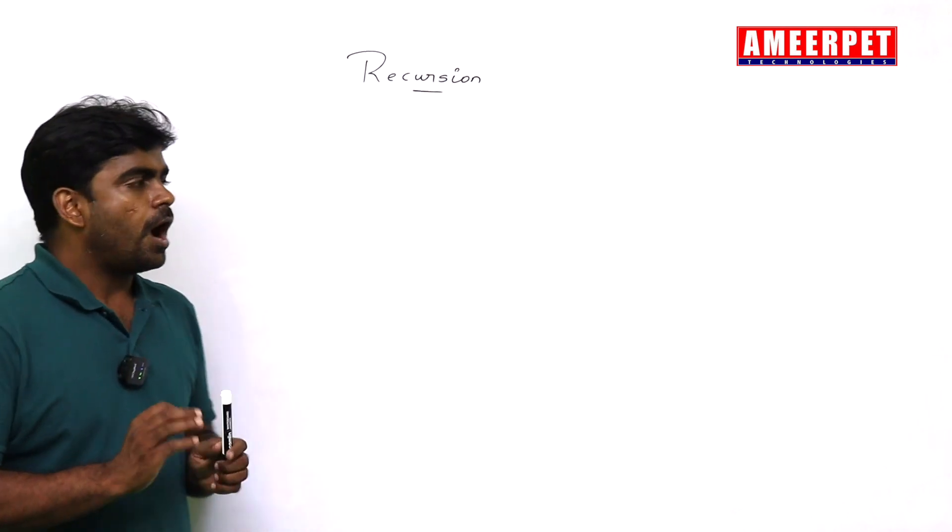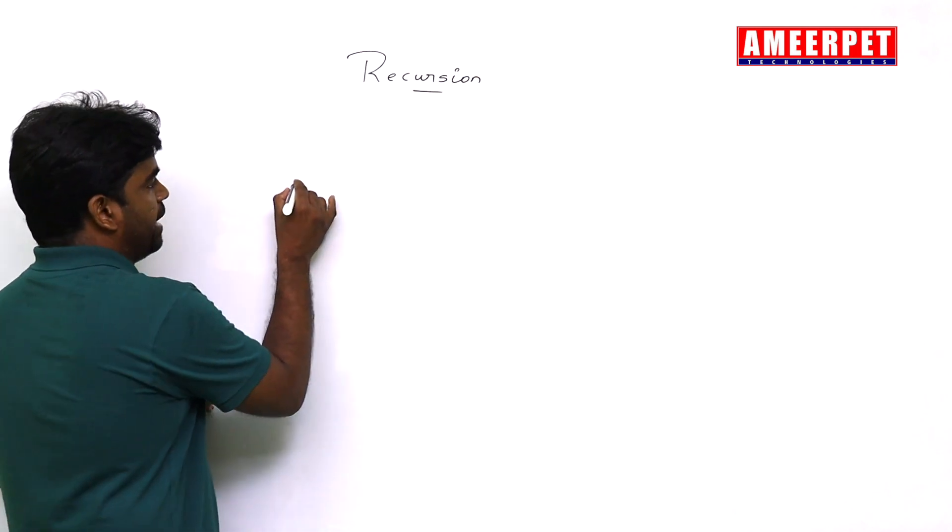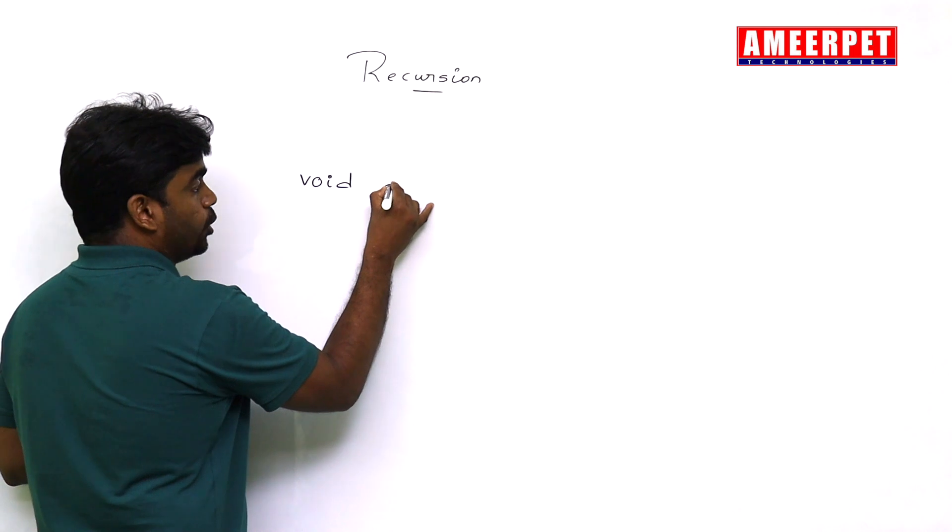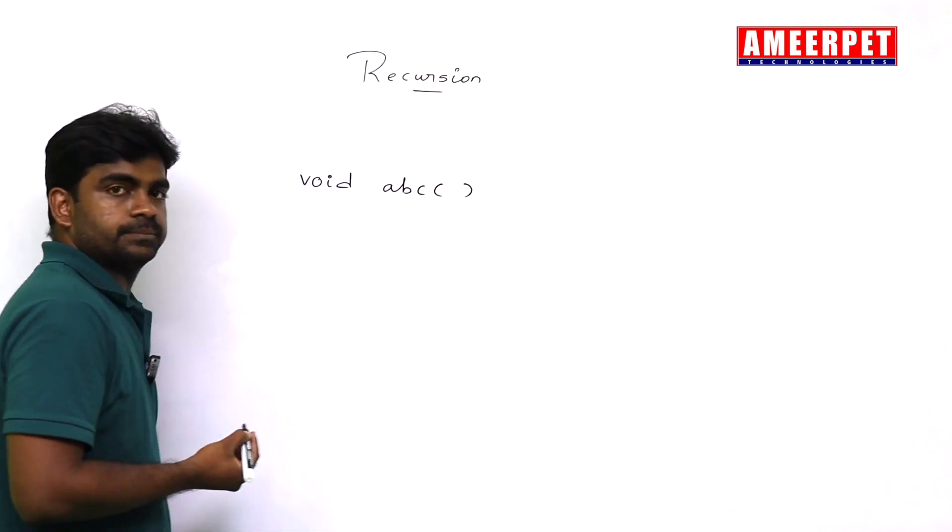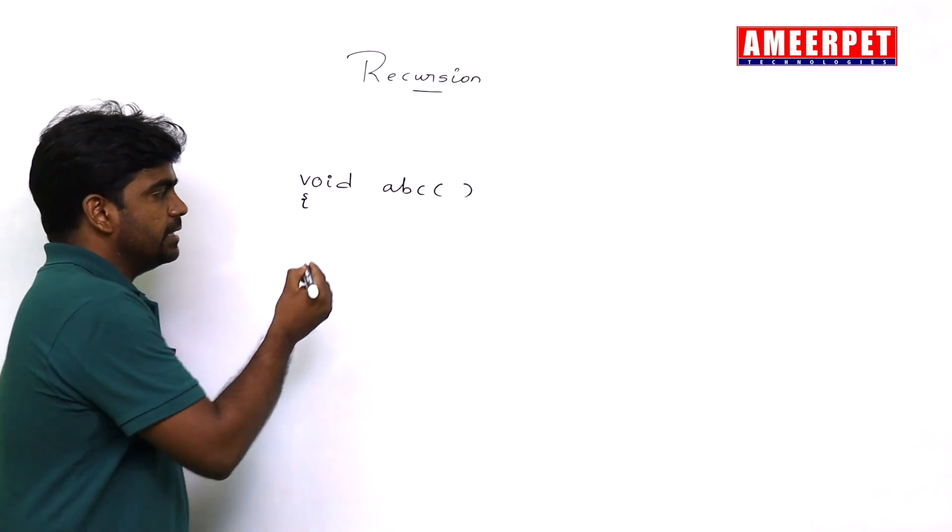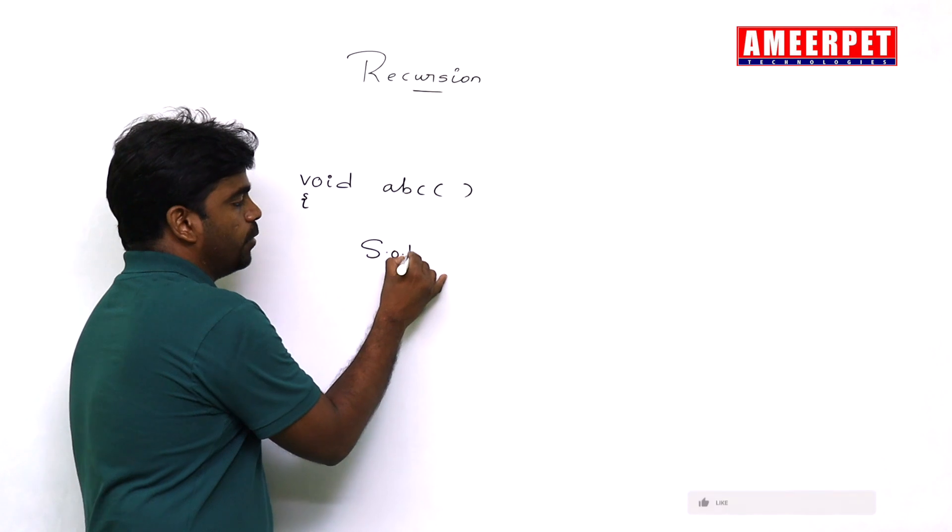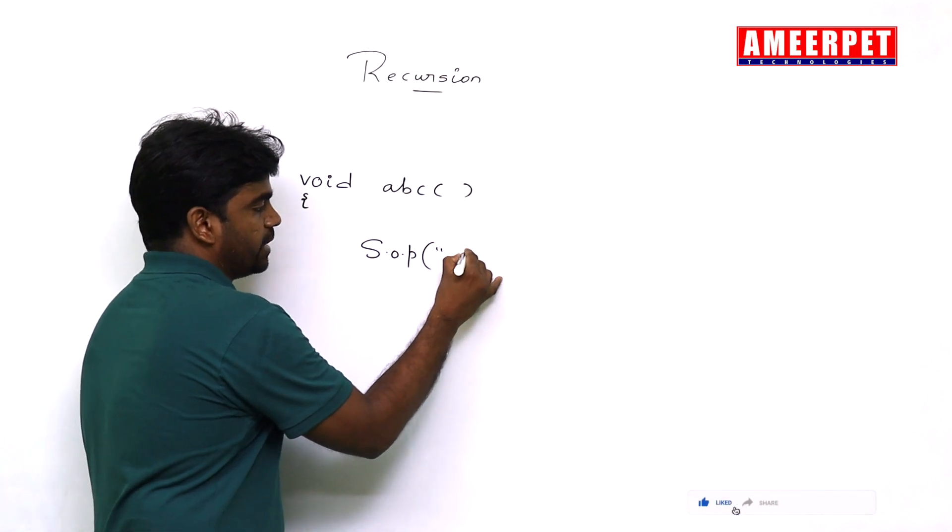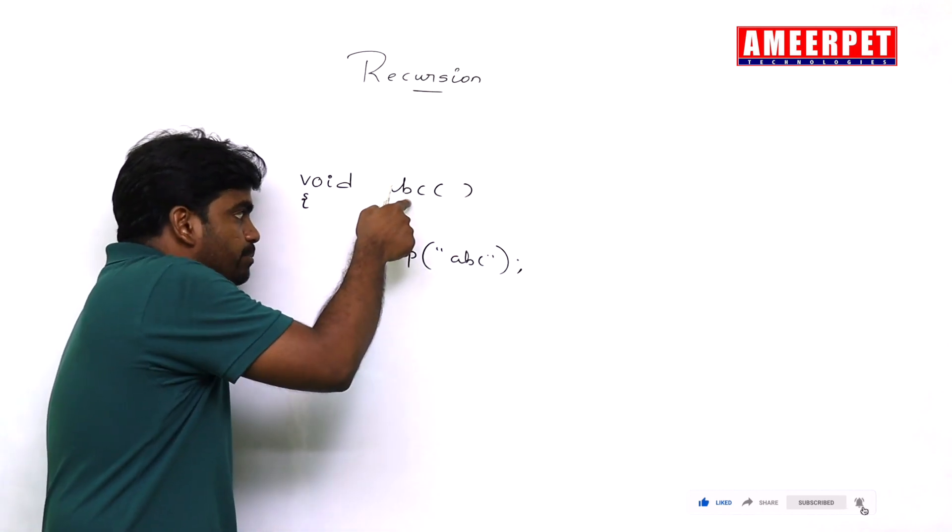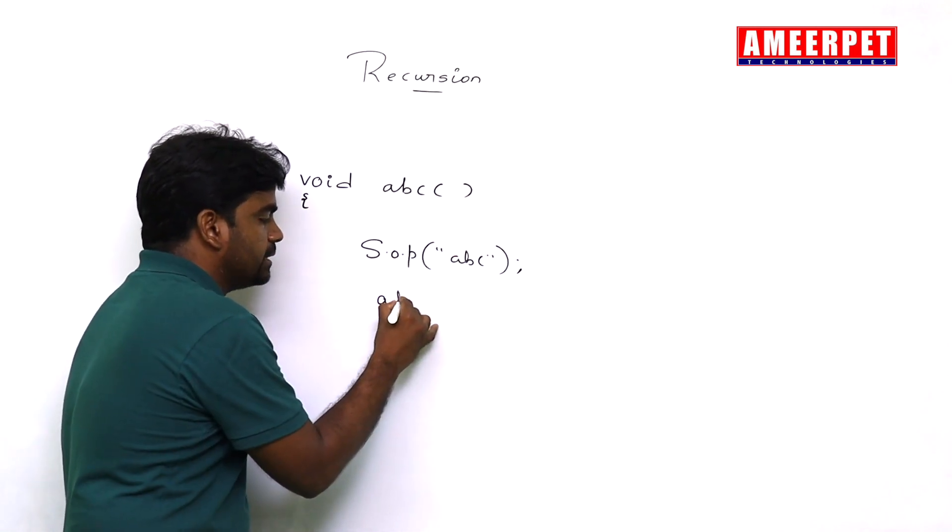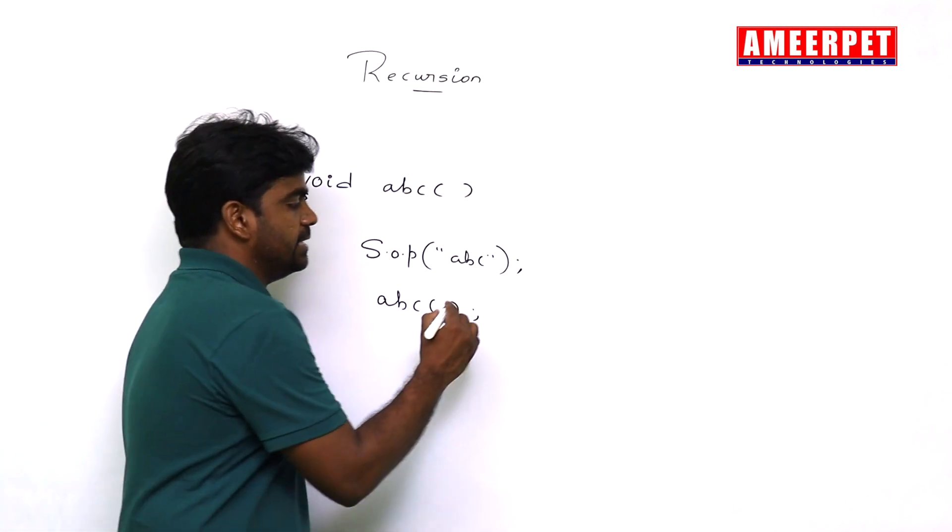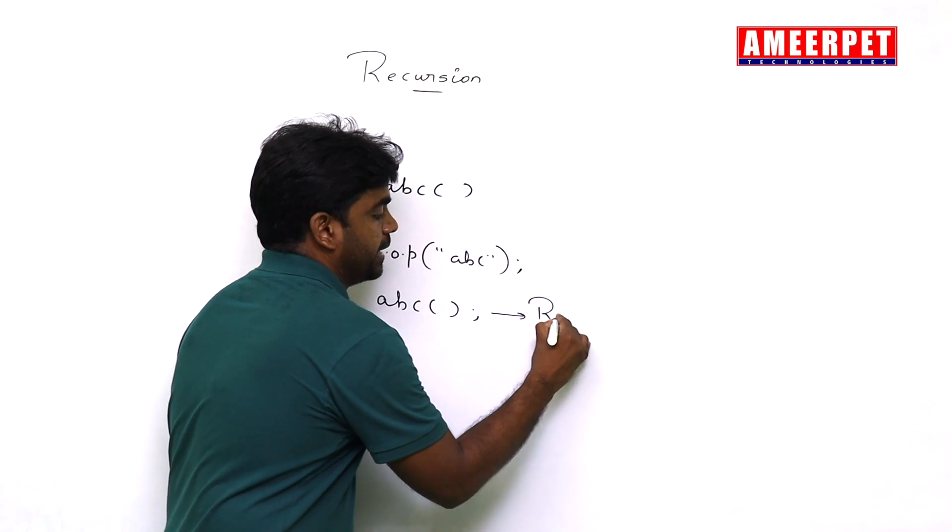Normally, how you define the method? Of course, for every method, return type is there, just void. Normally, I am writing this, this is not the complete code. ABC. And here, any statements you can write. System.out.println is ABC. From this method, we are calling the same method. This is called recursion.